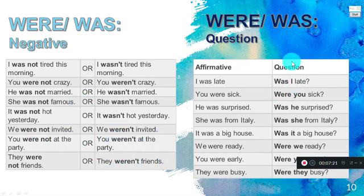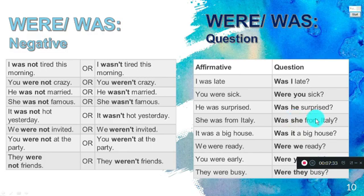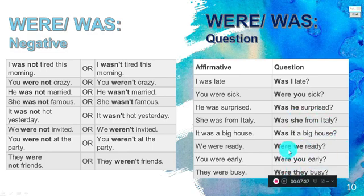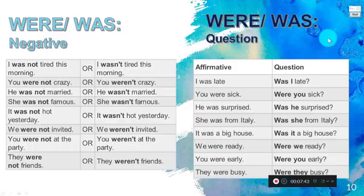With questions, the verb 'to be' changes place with the personal pronouns: Were you sick? Was he surprised? Was she from Italy? Was it a big house? When were you ready? Were they busy? The verb to be and the subject swap positions.